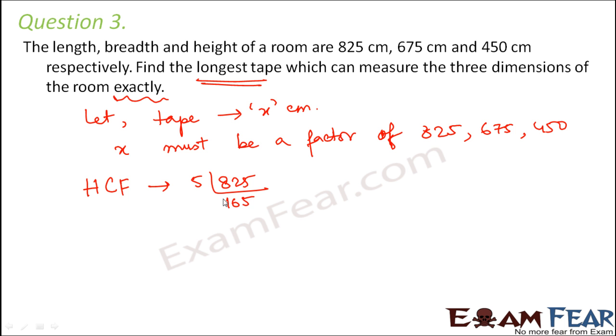So 5 into 165, again 5 into 33, this would be 3 into 11, this would be 11 into 1. So 825 can be written as 5 into 5 into 3 into 11.